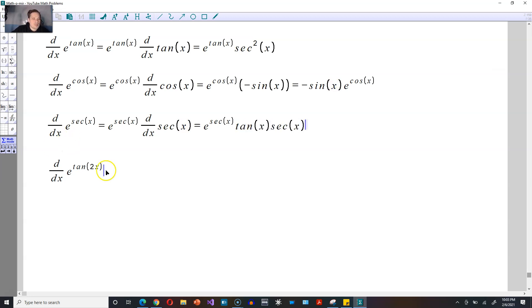For the last one, you're going to have to use the chain rule twice. So again, copy e to the tangent of 2x this time. Multiply by the derivative of that tangent of 2x. e to the tangent of 2x, the derivative of tangent of 2x would be secant squared of 2x. But see, this 2x is another function. It's not just x, it's 2x. So that means you've got to multiply by the derivative of 2x. The derivative of 2x is just 2.